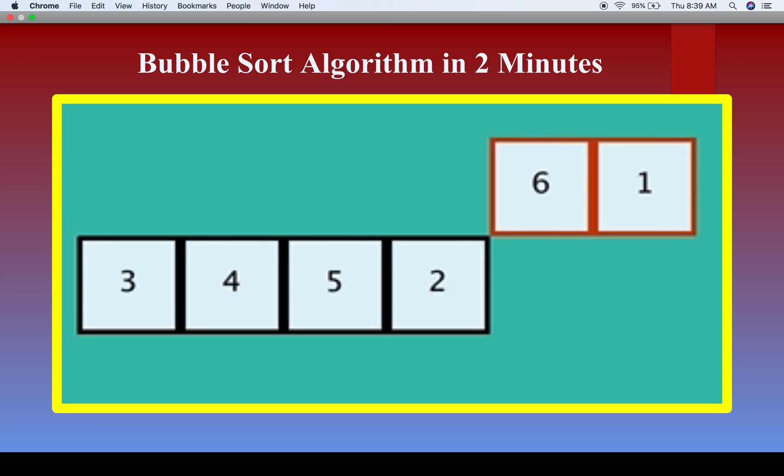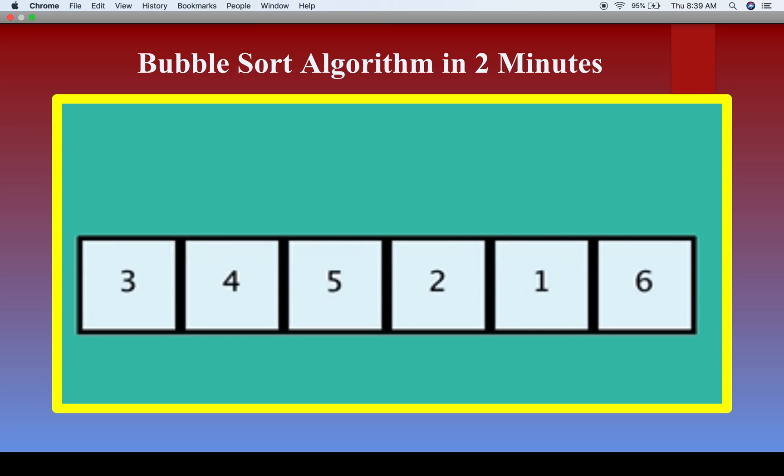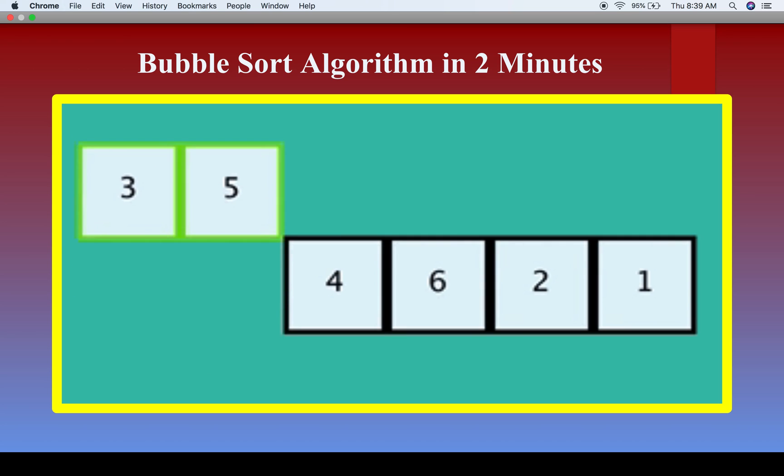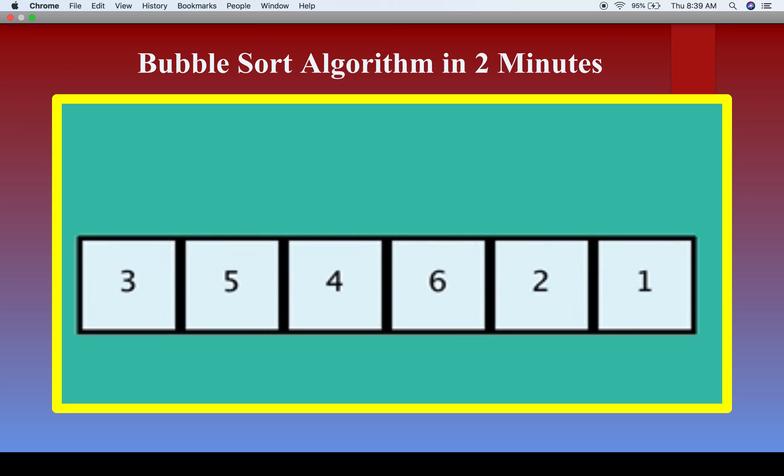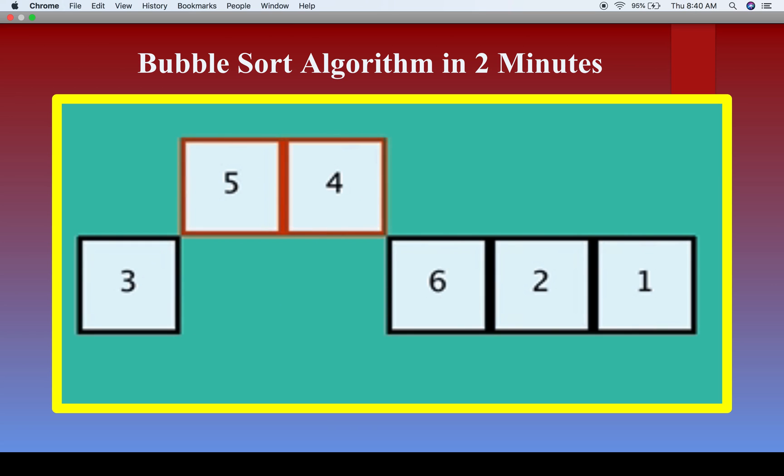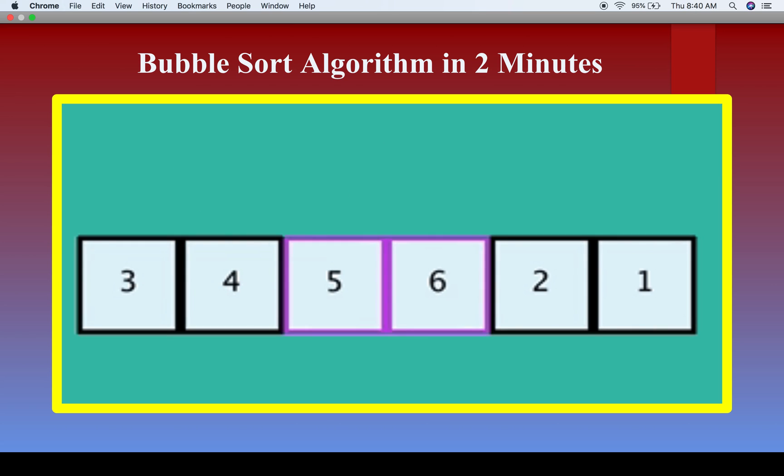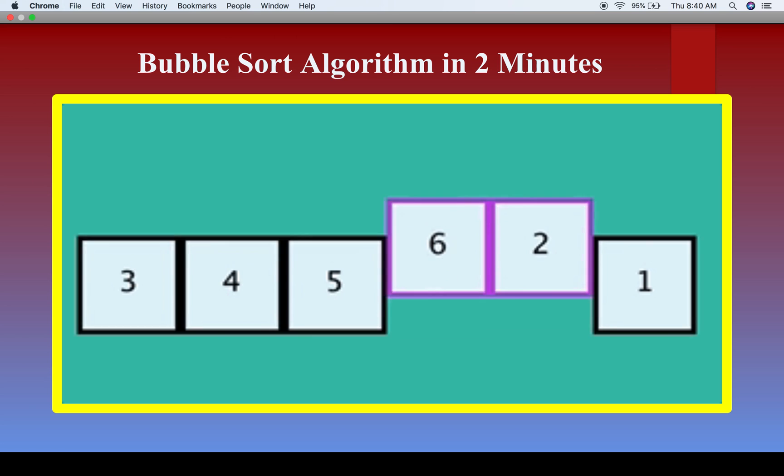So it happens like that. If we have an example again, we compare 3 and 5. 5 is greater than 3, so we keep it like that. Then we compare 5 and 4. 5 is greater, so we swap. Then we compare 5 and 6, we keep it like that. Then we compare 6 and 2, then we swap it. Then we compare 6 and 1, then we swap it.